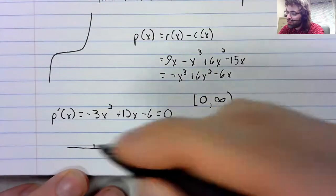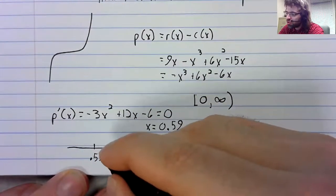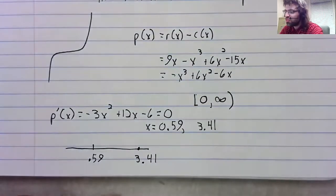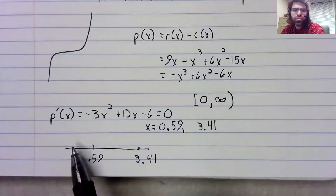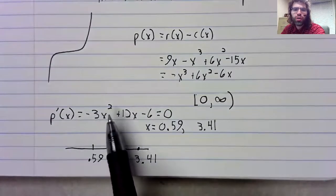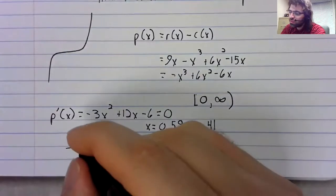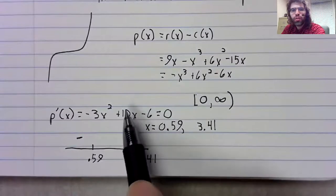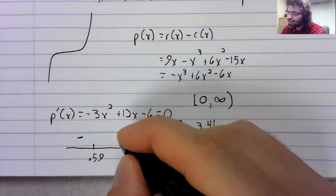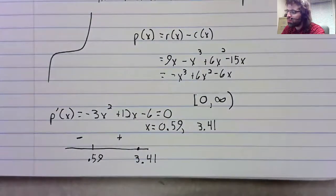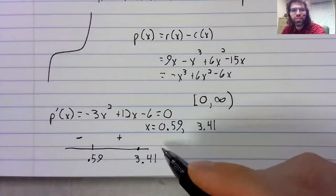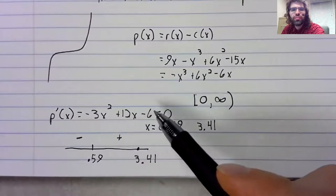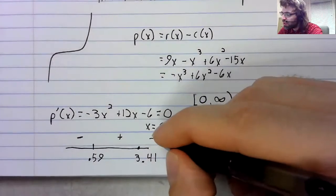And now if we construct a sign chart, let's see. Let's look at zero. Zero is in this interval. Zero plus zero minus six. That's negative. One is in this interval. 12 minus three minus six. That's positive. 10 is in this interval. 120 minus 300 minus another six. That's negative.